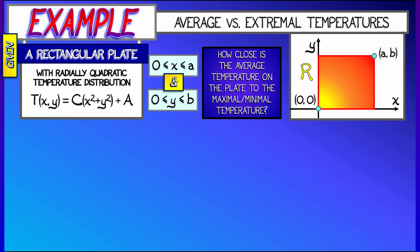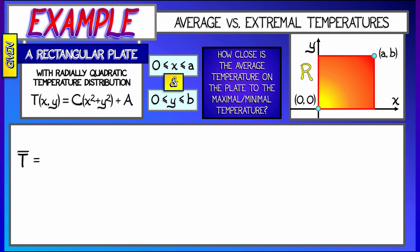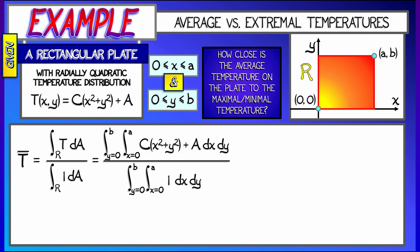Now, the first thing that we're going to do is compute the average value of t. T-bar is given as the integral of t over this rectangle, with respect to area, divided by the integral of 1 over that same domain. Now, we're going to write this as double integrals with respect to x and y, x going from 0 to A, y going from 0 to B.